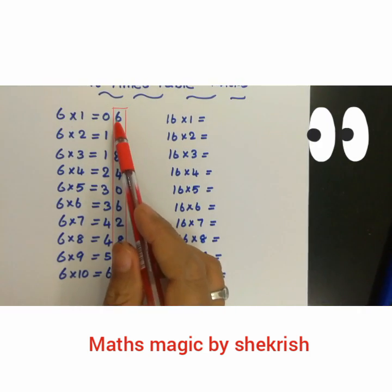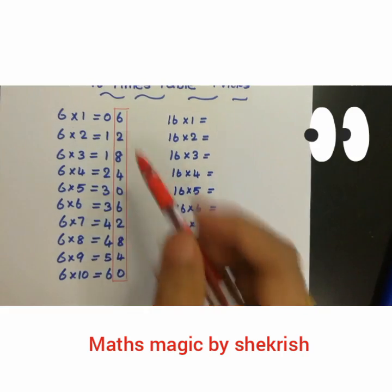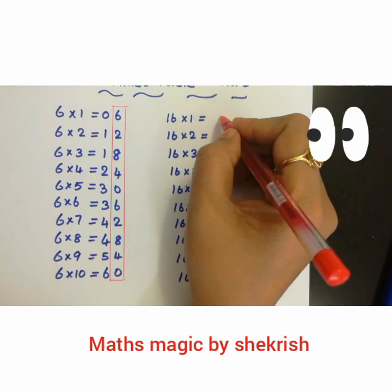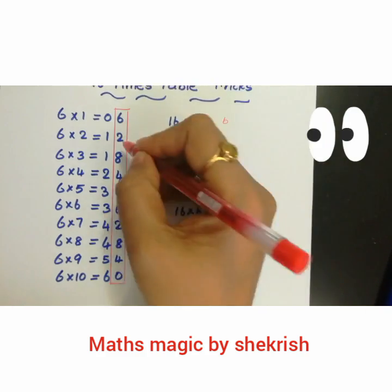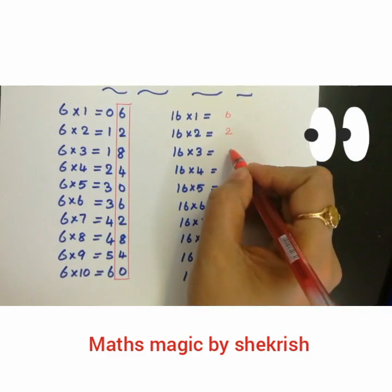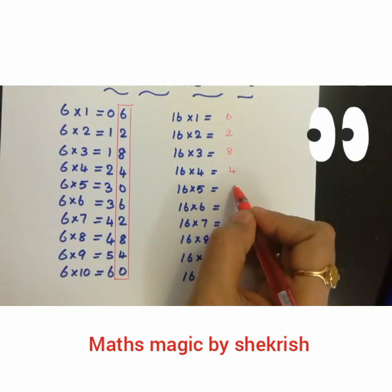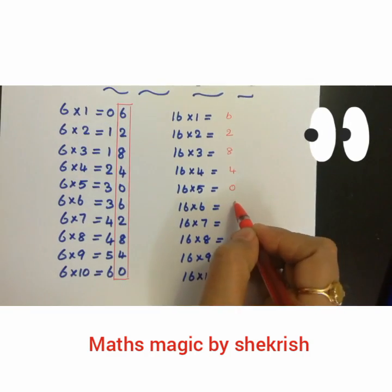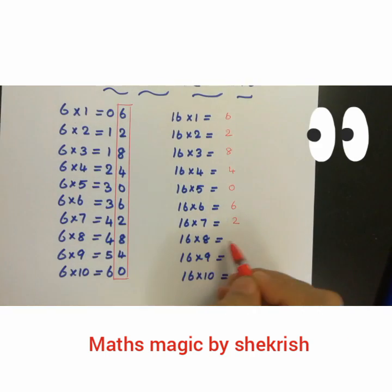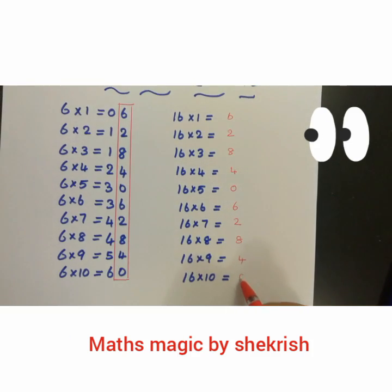We will copy the unit place digits from the 6 times table results. So: 6 in the unit place, 2 in the unit place, 8 in the unit place, 4 in the unit place, 0 in the unit place, then 6, 2, 8, 4, and 0.